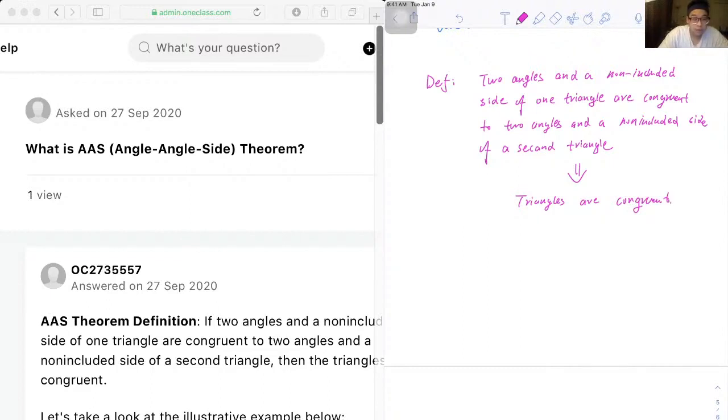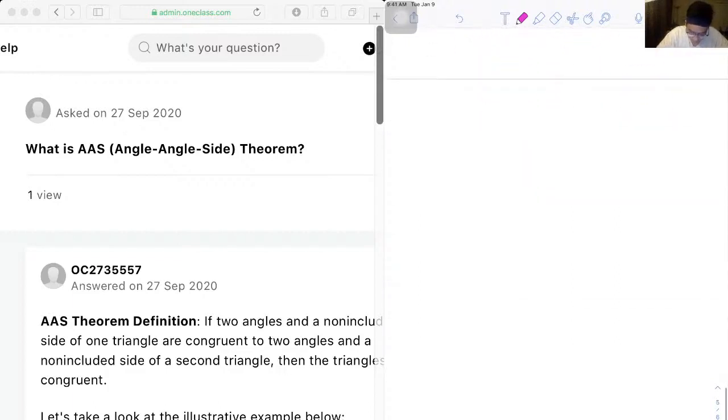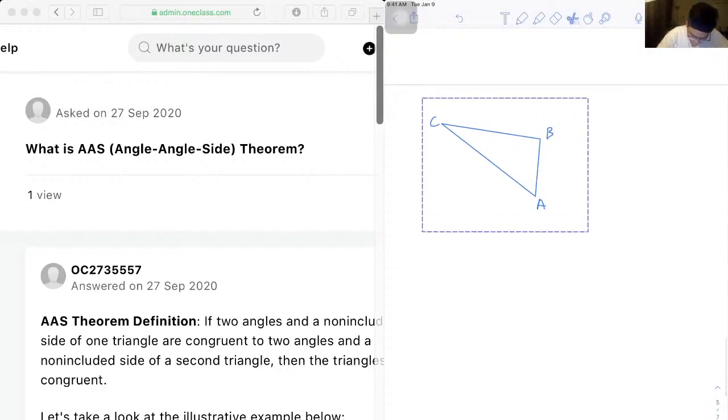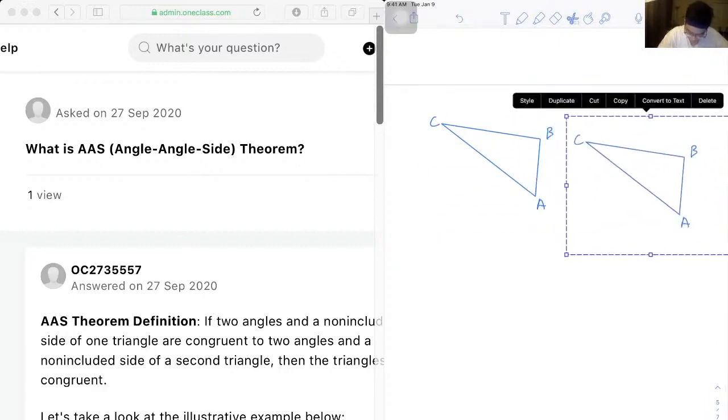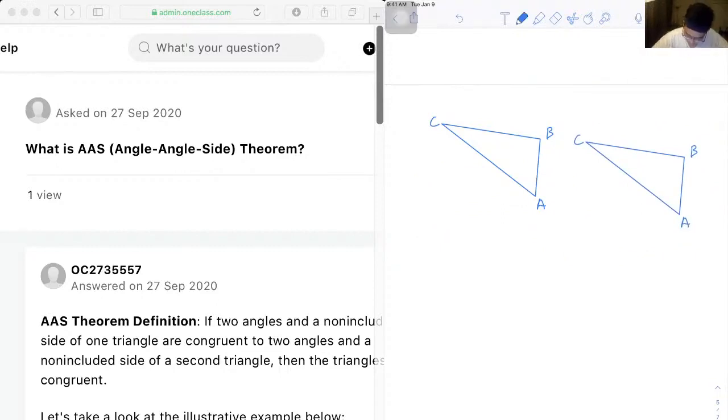Let's use an example to explain this. So let's see, I got two triangles right here. This is ABC, and I also have another triangle. Let's call this A bar B bar C bar.